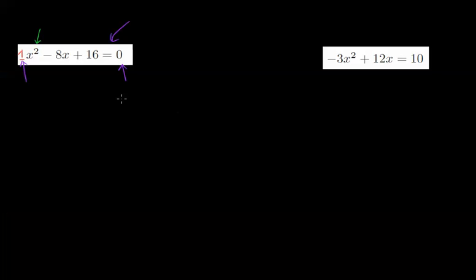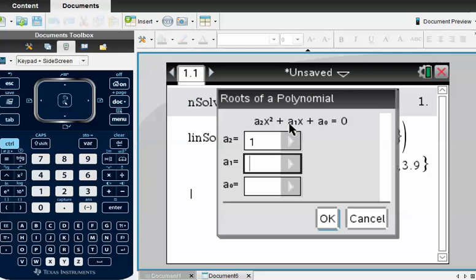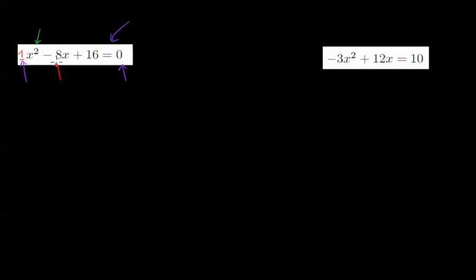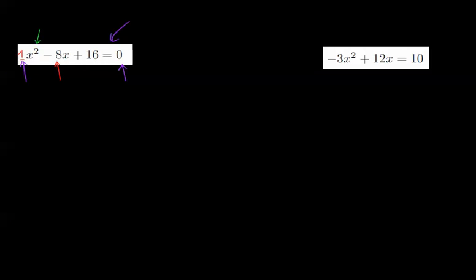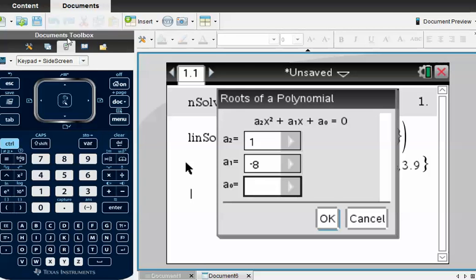The next box, it's saying what number's next to the x. Now, be careful here. It's not 8 that's next to the x, it's a minus 8. So in here, we write minus 8. And the last box, it's saying to us what number is on its own. Well, the number that's on its own is positive 16. So in here, we write 16. So 1x squared, take away 8x plus 16. Press OK.